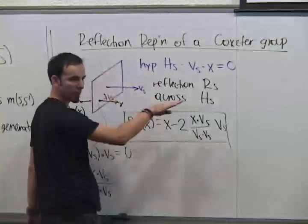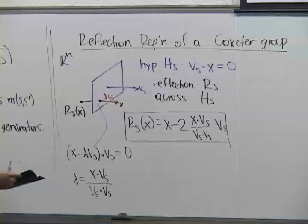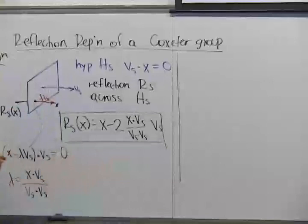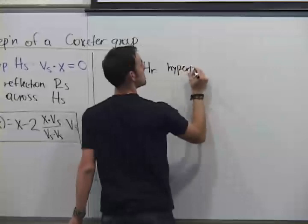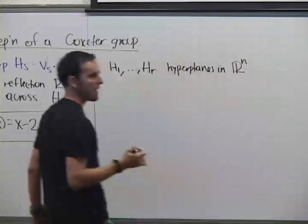You can see this formula just depends on Vₛ, the normal vector, and on X, the input. You have seen this at some point in your life, maybe in slightly different language. Now I would like to think about not just one hyperplane but having several hyperplanes — say R hyperplanes in Rⁿ.